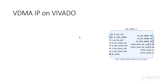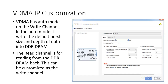This is the VDMA IP in Vivado. It has an S-AXIS stream-to-memory-map port and an M-AXIS memory-map-to-stream port. These ports are necessary for storing information to DRAM and producing the streaming output. The customization options of VDMA will also be discussed in a live session led by another co-instructor. We can enable the write channel and configure its parameters according to our needs.